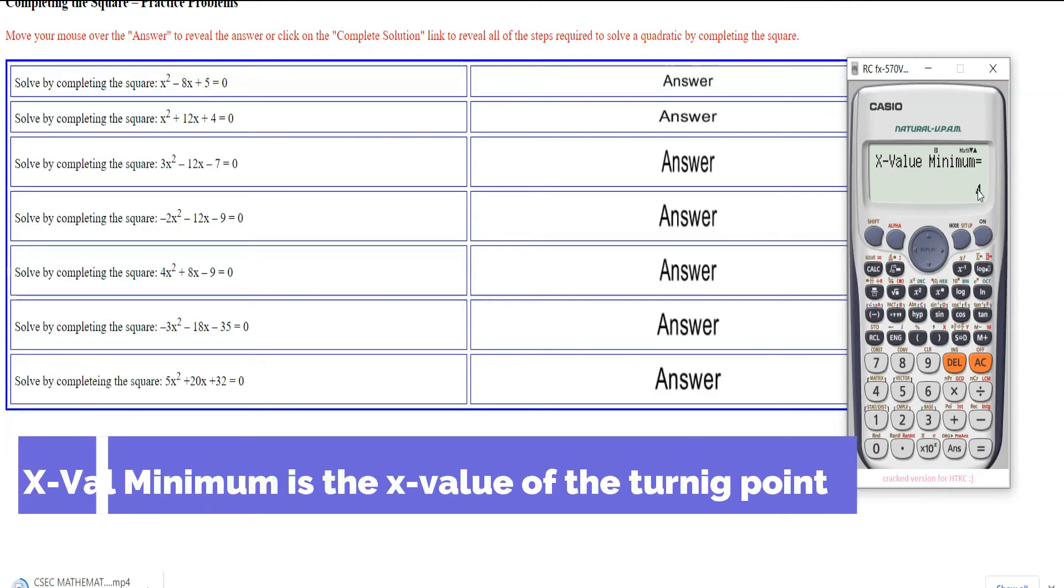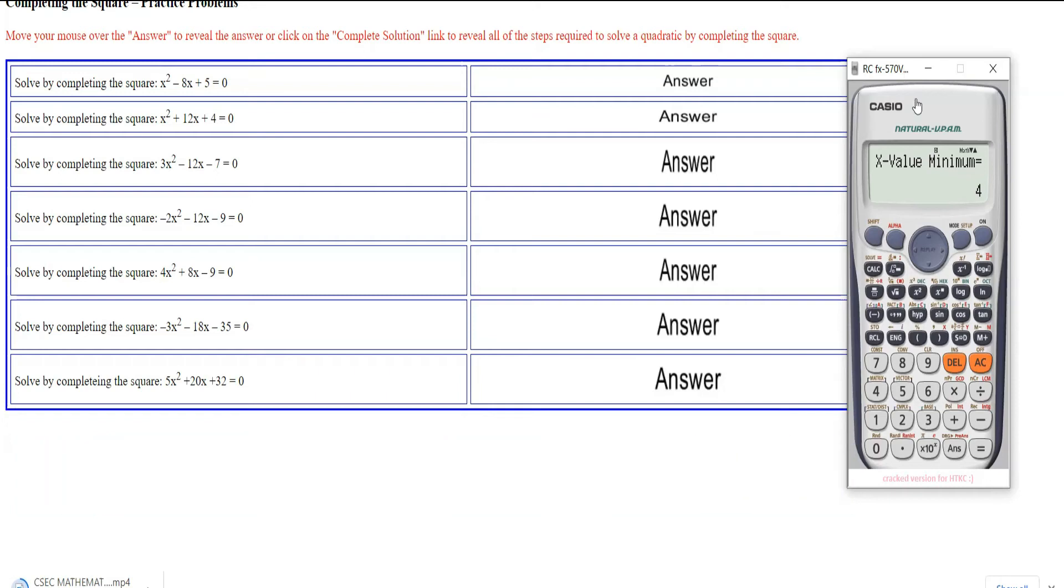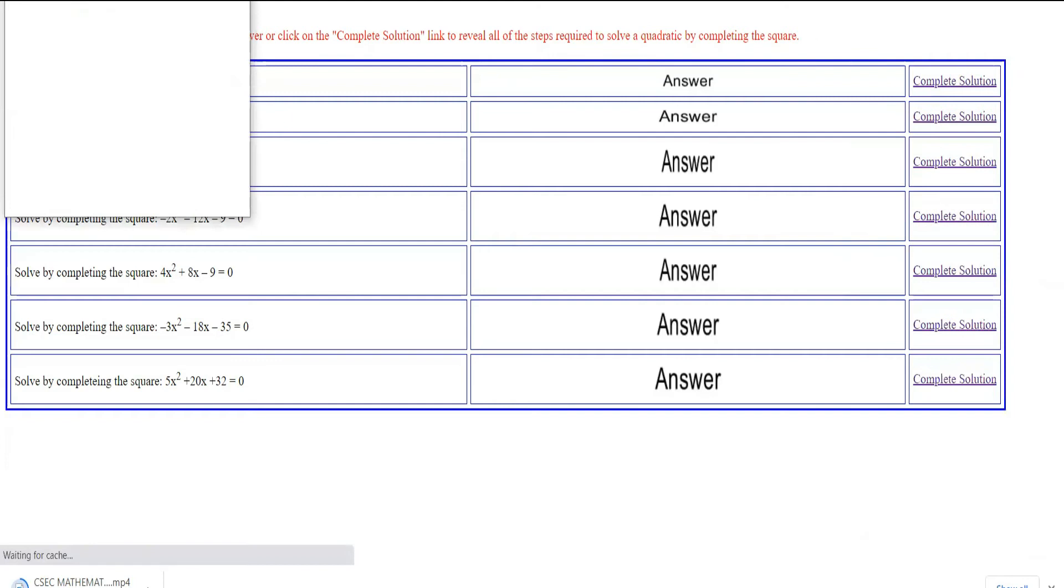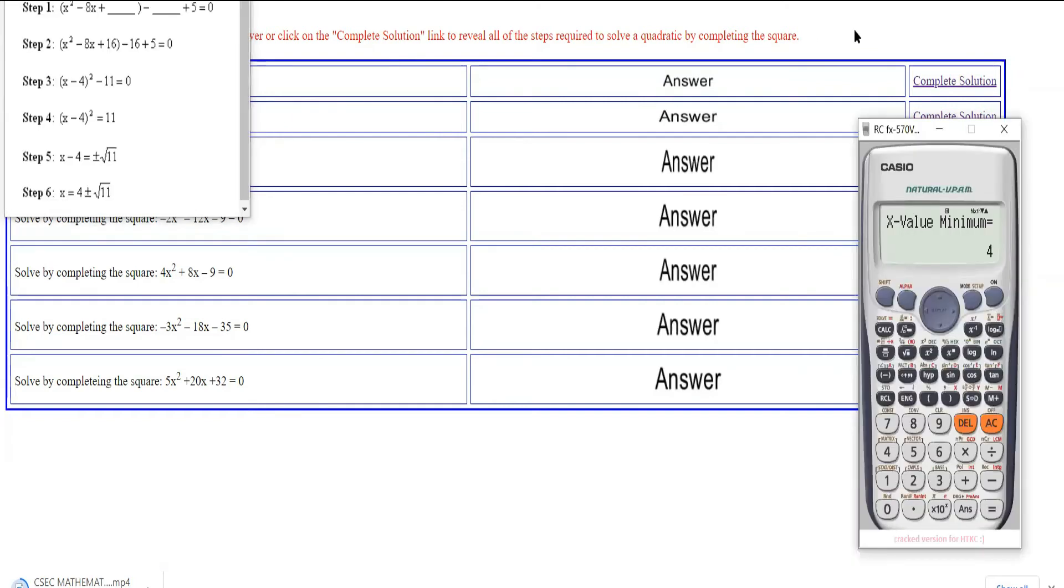Here it is: the x-val min is 4. Look what it means right there. If you look at the complete solution right here, see it here, the x-value at the turning point is 4. So this allows you to find the x-value at the minimum point.